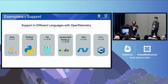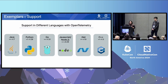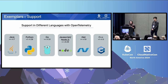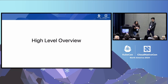OpenTelemetry is a vendor-agnostic solution for collection, processing, and exporting of metrics, traces, and logs. It offers support in a variety of languages for using exemplars, so no matter what your tech stack is, you can use OpenTelemetry to set up exemplars for your service. The versions listed here are the base versions that you will need to get exemplars out of the box. Now, Charlie, do you want to talk about the high-level overview?